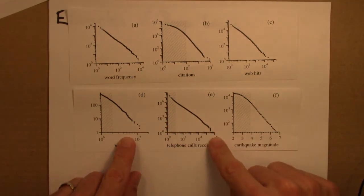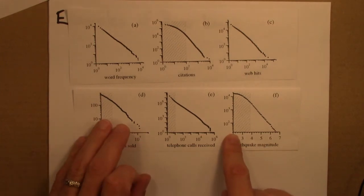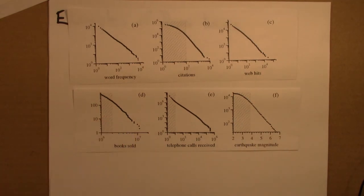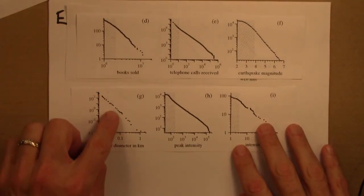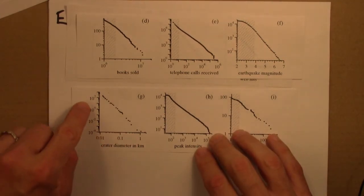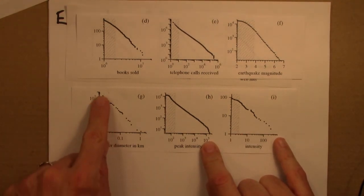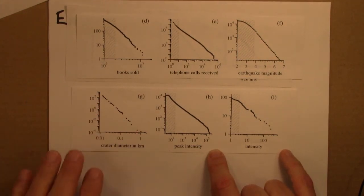Similarly for the number of telephone calls received in a day, earthquake magnitudes. There's lots and lots of small earthquakes, and then this long tail of larger earthquakes. Let's see. Here's another one from geology. These are crater sizes. I forget where. Let's see if I can look that up. Craters on the moon. So there are lots and lots of small craters, just like there are lots and lots of infrequent words. But then some very, very large craters. Again, this long tail.